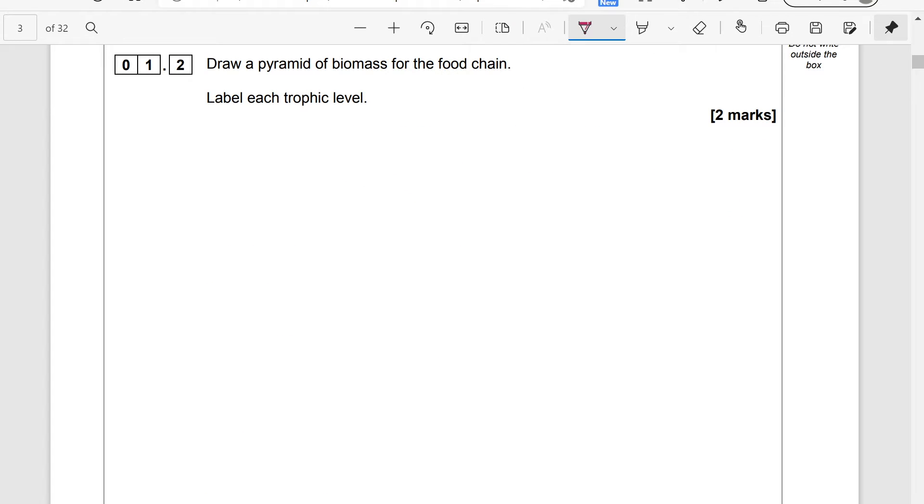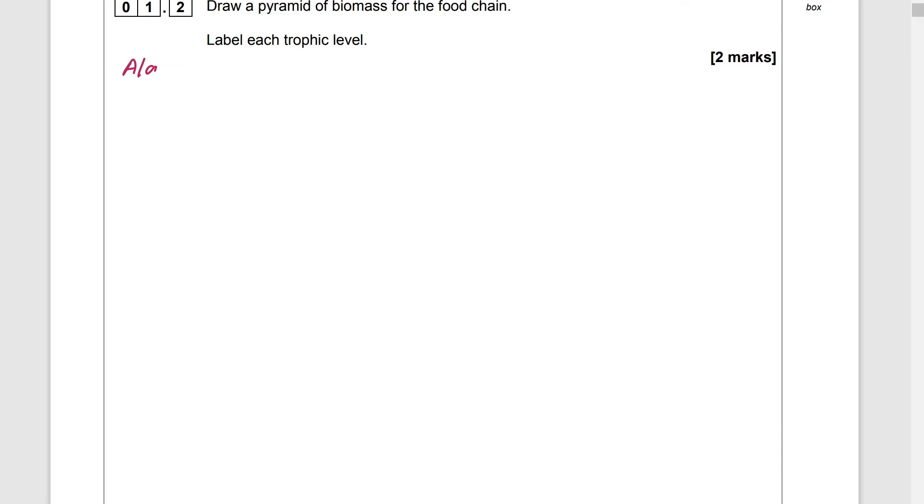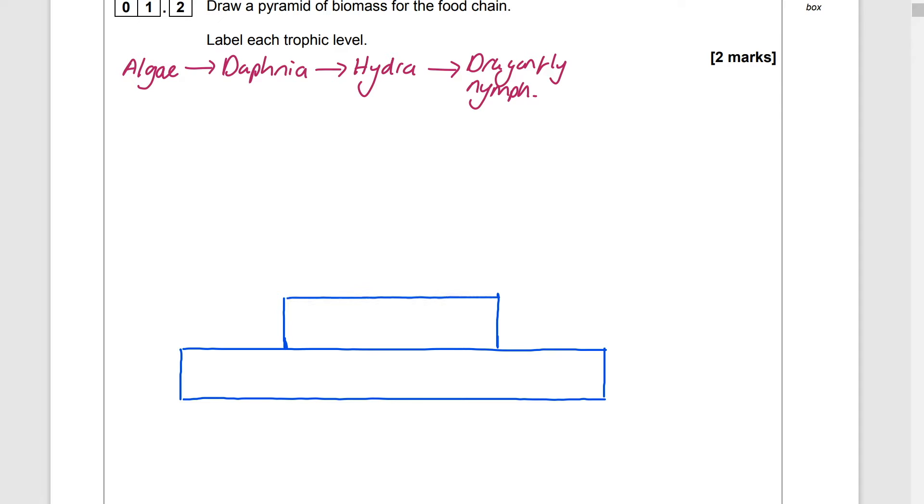Draw a pyramid of biomass for the food chain and label each trophic level. So I'm just going to quickly scribble this food chain out here so we've got it for reference but you obviously don't have to do that. The producer always goes on the bottom and unless told otherwise is the largest in size then the primary consumer then the secondary and then the tertiary or the top or apex predator.